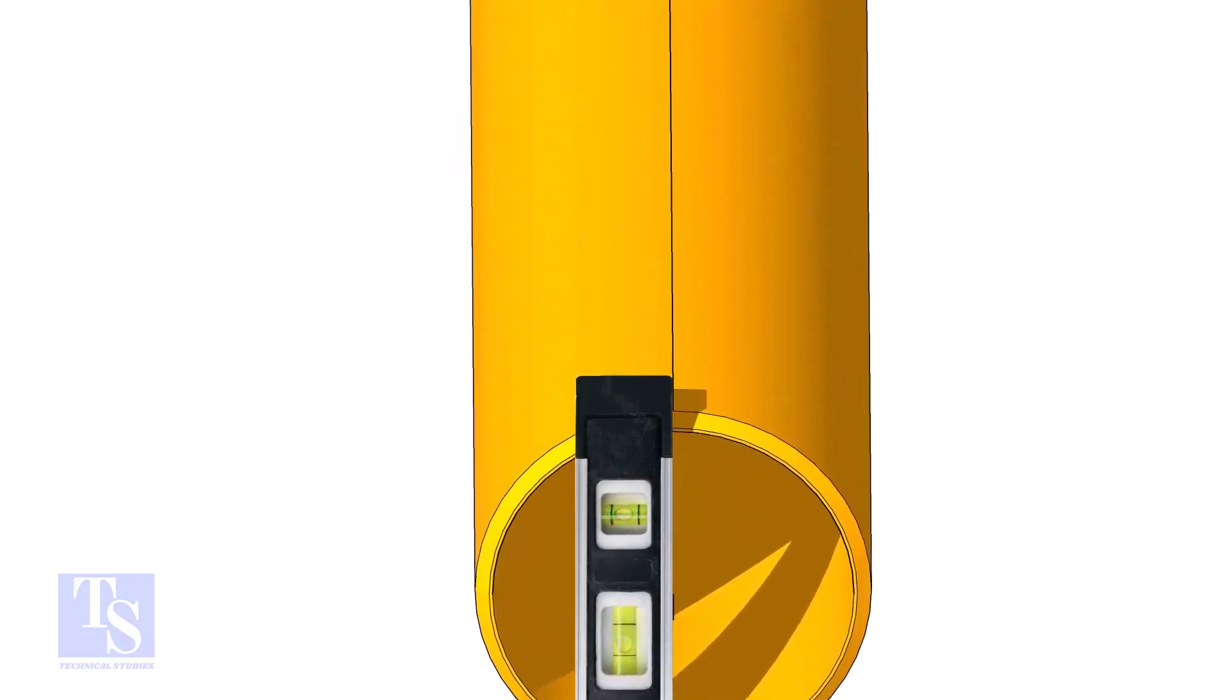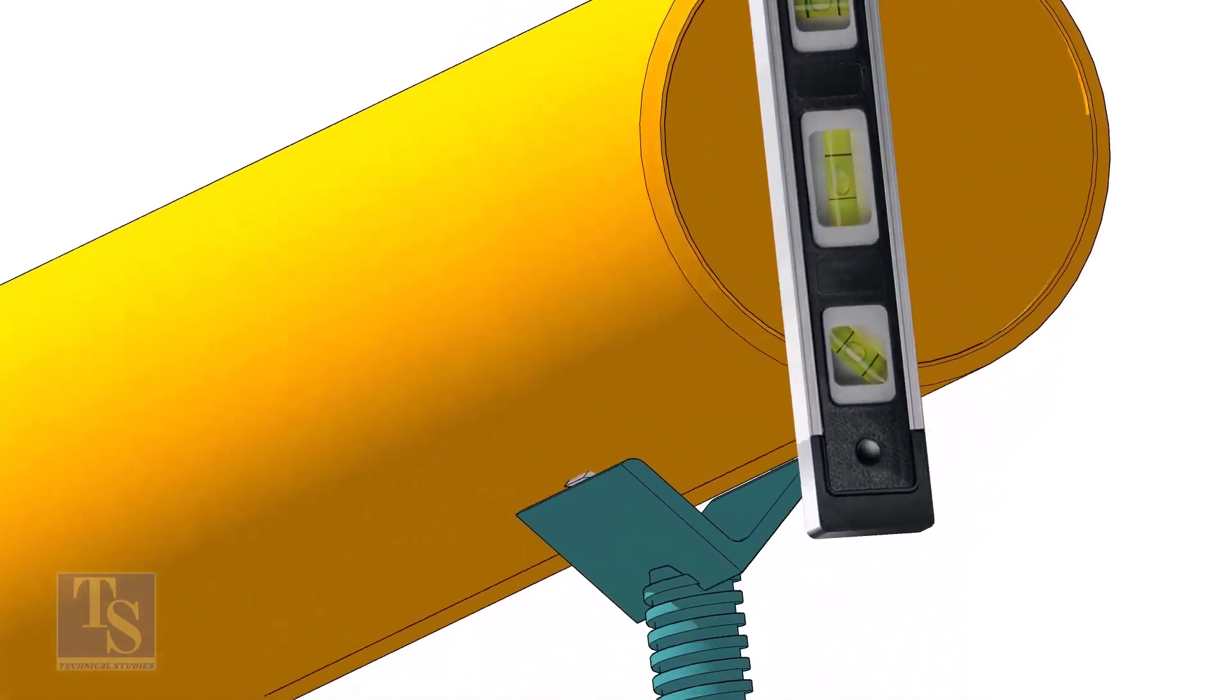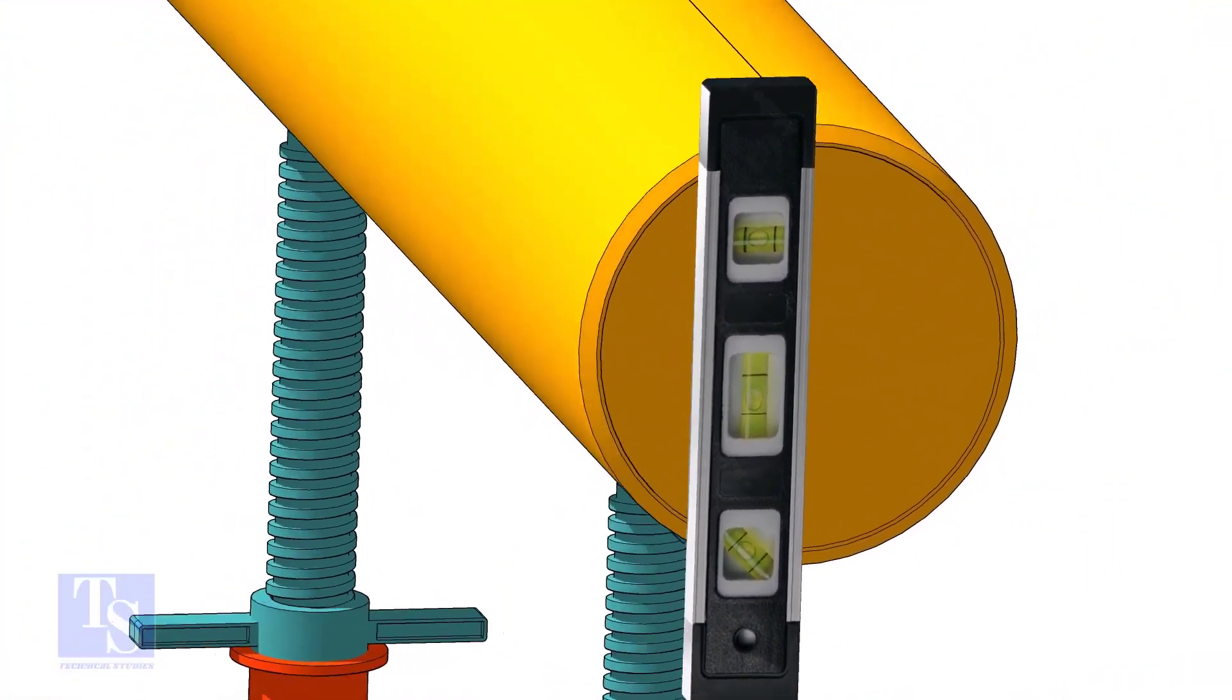Level the pipe horizontally and vertically as shown. After leveling, arrest the pipe to stop it from rotating.